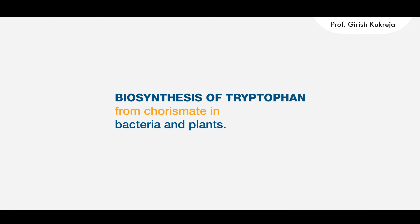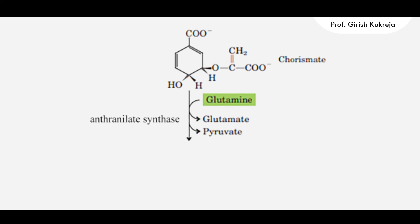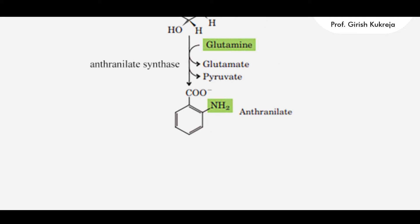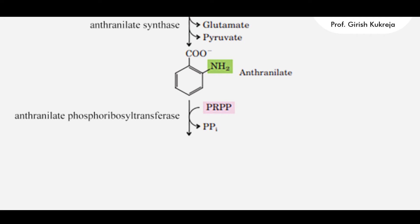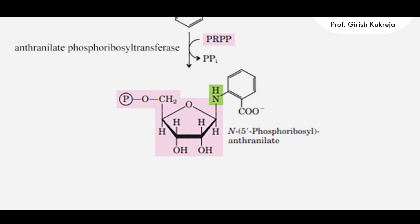The biosynthesis of tryptophan starts from chorismate in bacteria and plants. In the first step, chorismate is converted to anthranilate by the enzyme anthranilate synthase, with glutamine serving as the nitrogen donor — this nitrogen will later become part of the indole ring. In the next step, anthranilate combines with PRPP in a reaction catalyzed by anthranilate phosphoribosyltransferase. The indole ring of tryptophan is derived from the ring carbons and amino group of anthranilate, and two carbons from PRPP.